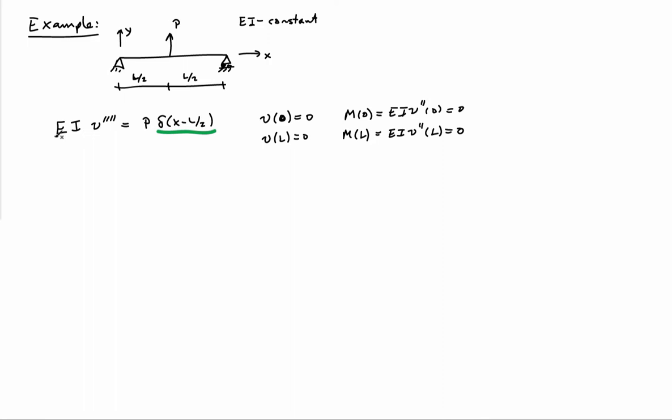Notice that I've gone ahead and written EI with four derivatives on V because EI is a constant, so I can pull it outside of the double derivative.